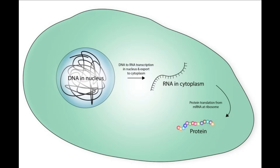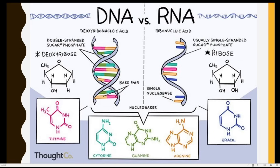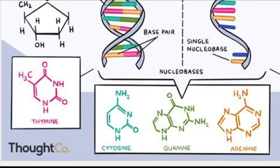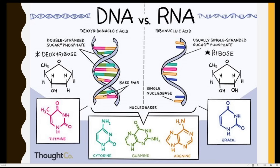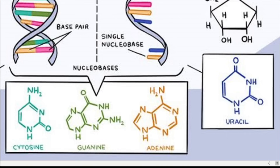In terms of nucleobases, we have four types of nitrogenous bases for each type of nucleic acid. For DNA, we have thymine, cytosine, guanine, and adenine. On the other hand, for RNA, we don't have thymine — we still have cytosine, guanine, and adenine. However, thymine is replaced with uracil.